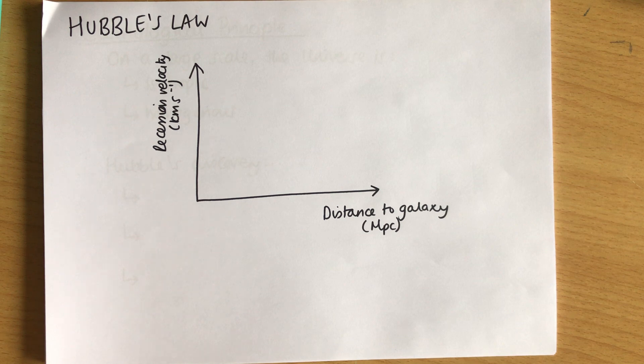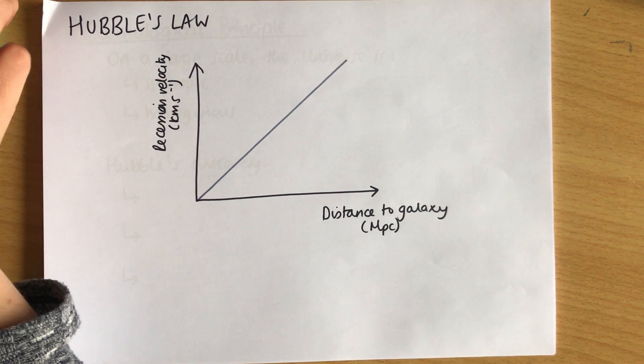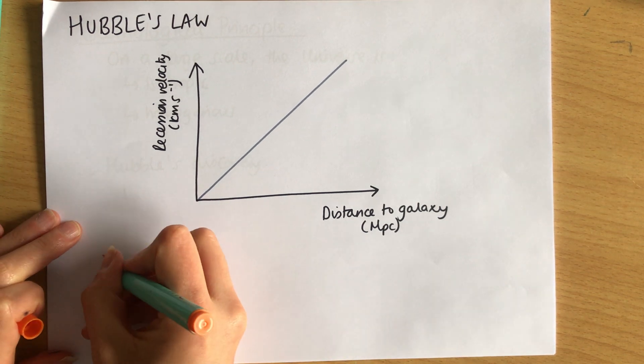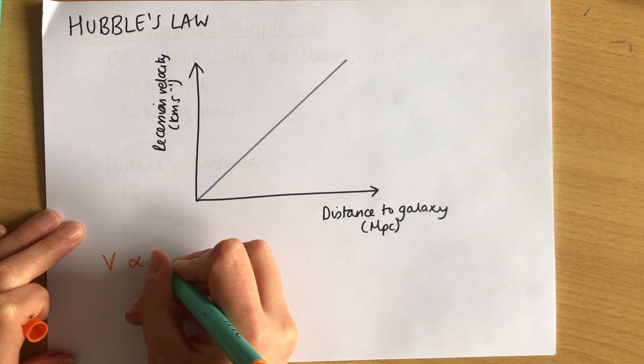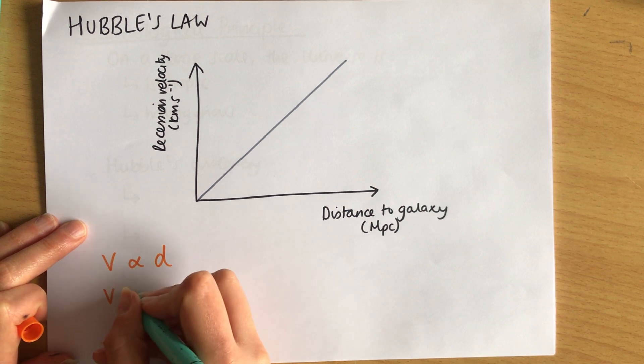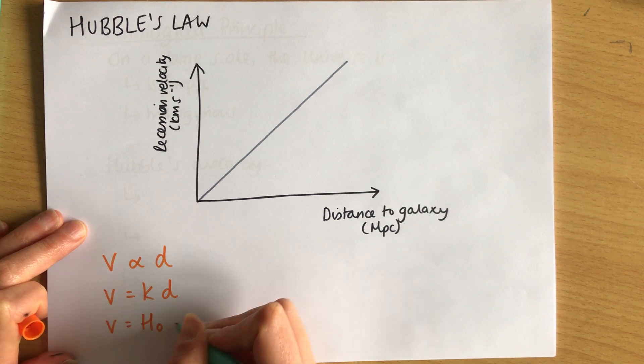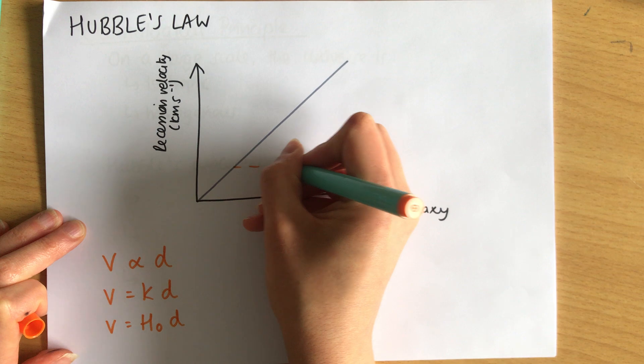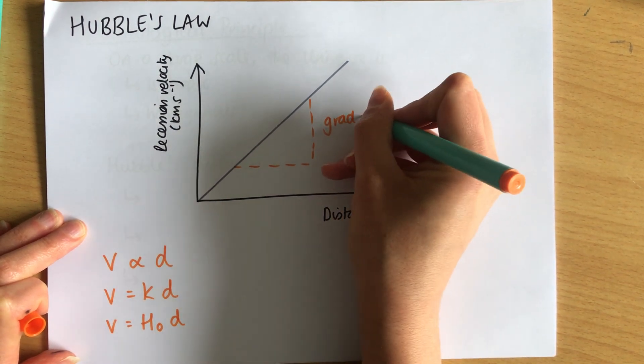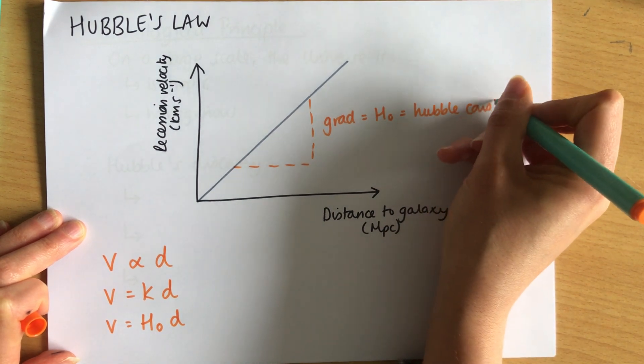And he plotted that velocity against the distance to the galaxy, and he called this a recession velocity, because these galaxies were pretty much all moving away from us. The only ones that are really moving towards us are some close-by ones, which aren't particularly following the large-scale rules of the universe, because they're nearby. So he plotted a graph of recession velocity in kilometres per second versus the distance to the galaxy in megaparsecs, which is just a unit of distance that we use for astronomy quite a lot. And he found that the two were directly proportional. His data was not perfect, but there was a definite linear trend, and it was definitely directly proportional. He found that the velocity, the recession velocity, was proportional to the distance of the galaxy. Now, we can also write this as V equals a constant times D, and this constant we call H0. And H0 is the gradient of the graph. And this value is called the Hubble constant.